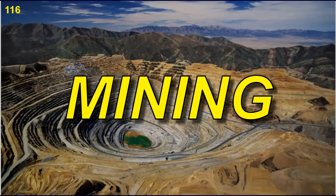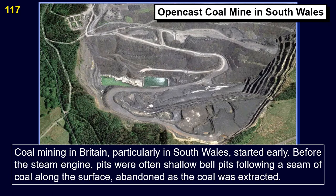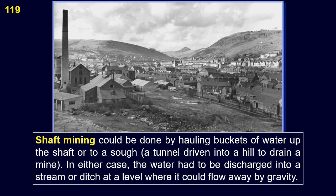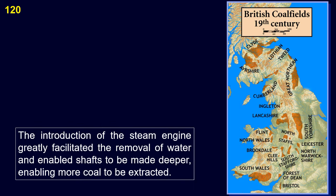Coal mining in Britain, particularly in South Wales, started early. Before the steam engine, pits were often shallow bell pits following a seam of coal along the surface. In other cases, if the geology was favorable, the coal was mined using an adit or drift mine driven into the side of a hill. Shaft mining was done in some areas, but the limiting factor was the problem of removing water. Shaft mining could be done by hauling buckets of water up the shaft, or via a sough — a tunnel driven into a hill to drain a mine. The introduction of the steam engine greatly facilitated the removal of water and enabled shafts to be made deeper, enabling more coal to be extracted.